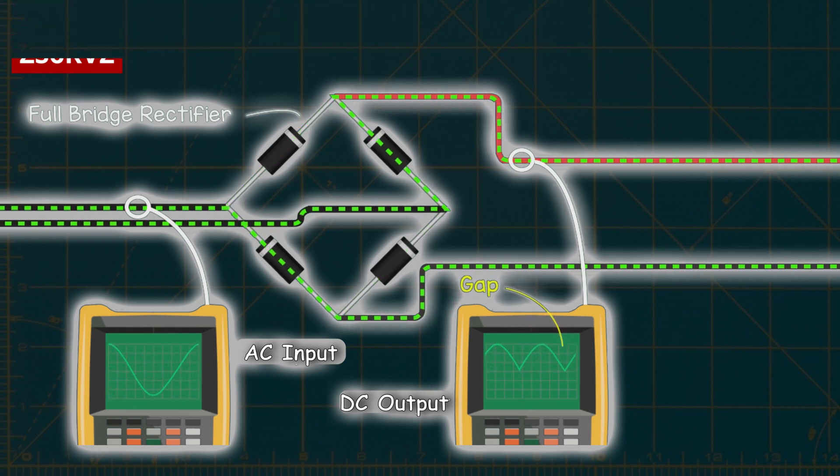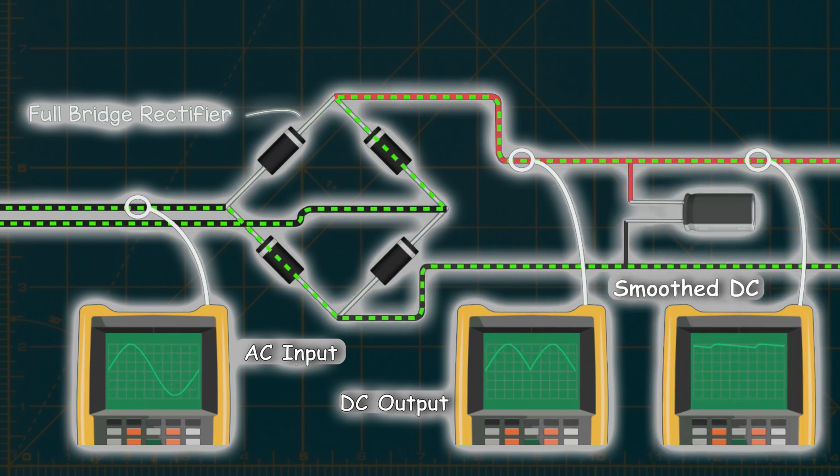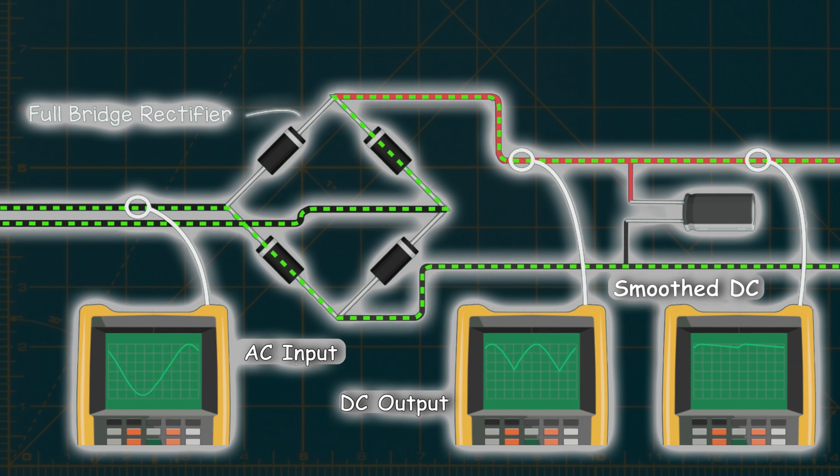However, to further refine the DC output, capacitors can be incorporated to smoothen the ripple and approximate a continuous, uninterrupted DC supply.